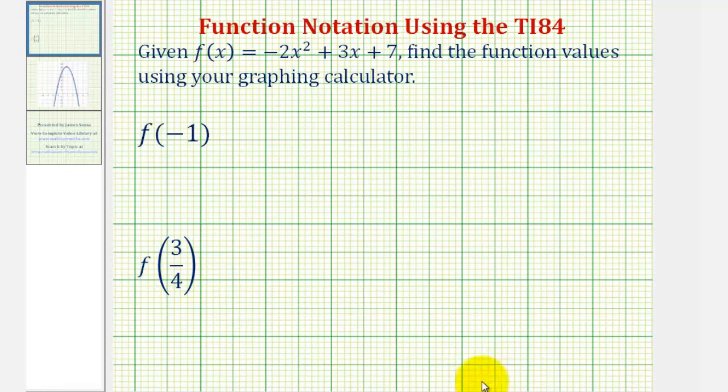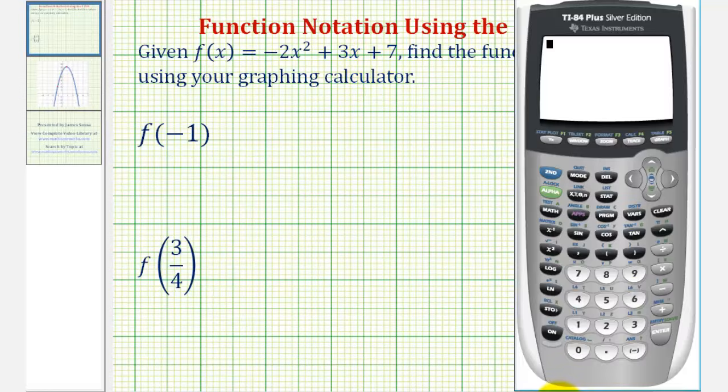For the first step, we're going to enter the function into the graphing calculator. Press Y equals, clear out any old functions by pressing clear, and now enter the new function: negative 2x squared plus 3x plus 7.